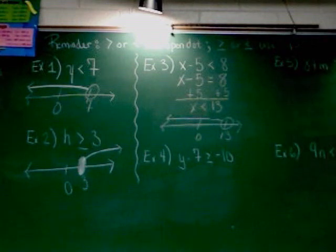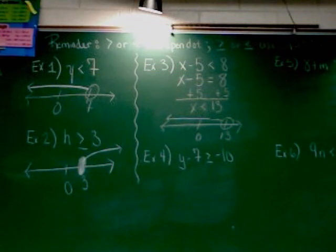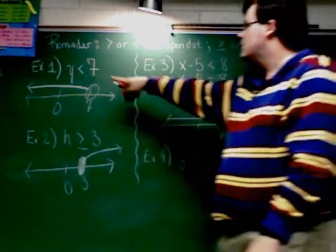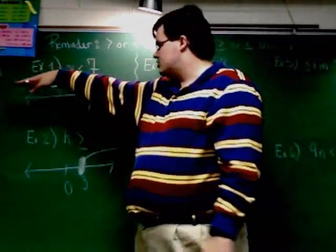If you write the variable first, only if you write the variable first, the shading will always go the same way that the arrow points. Variable first, this points left, shading to the left. This points left, variable first, shading to the left.